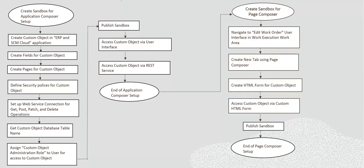Listed next are the Page Composer Setups. Create a Sandbox for Page Composer Setup. Navigate to the edit work order user interface in the Work Execution Work Area in manufacturing. Create a new tab by enabling and using Page Composer. Create an HTML form for the custom object — the form accepts input details for the custom object and creates a record using the custom object REST service. Access custom object via custom HTML form in the user interface. Publish the Sandbox to complete the Page Composer integration setup.